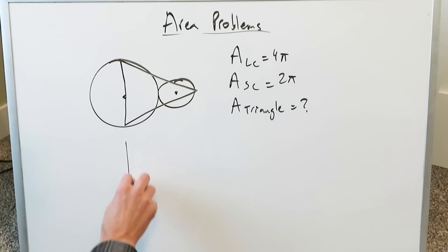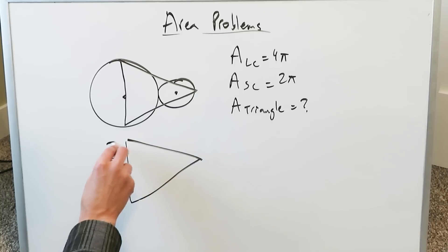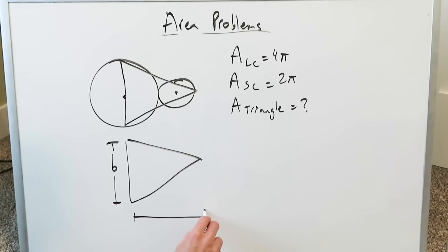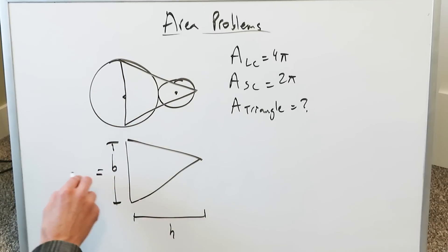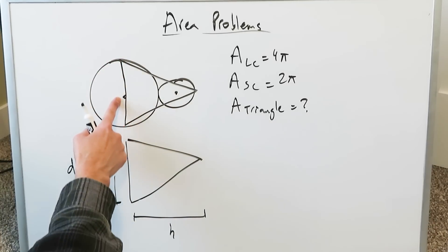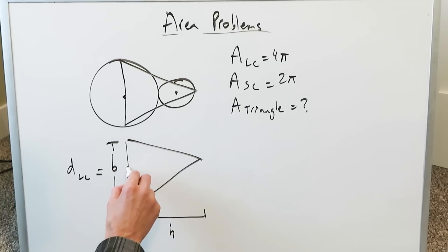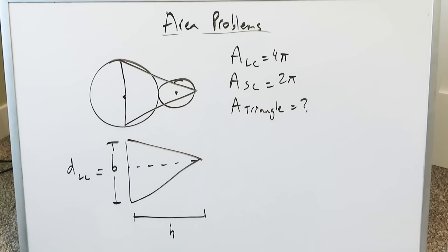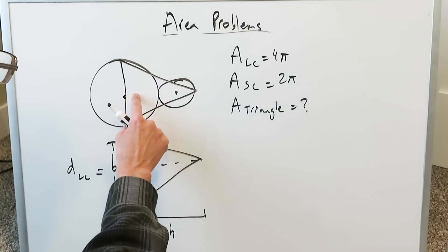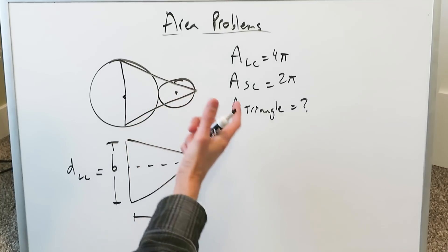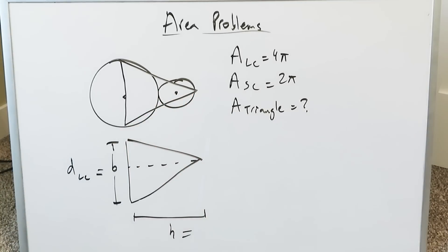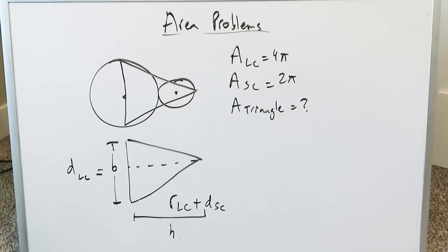If you pluck out this triangle, we have a certain base dimension right over here and a certain height dimension. If you can determine the base and the height, we're good. The base is also equal to the diameter of your large circle — the large circle diameter is the base of the triangle. Looking at the height, it's composed of the radius of the large circle and the diameter of the small circle.